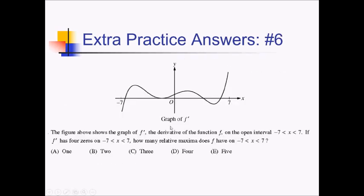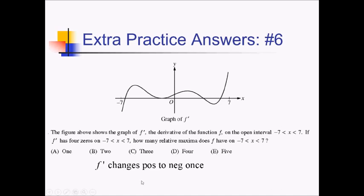On this problem, we're given the graph of f prime from negative 7 to 7 and we're told that there are four zeros on this interval. The reason they're telling us that there are four zeros is that this spot where we appear to be bouncing — by telling us we have four zeros, we're guaranteed that this right here really is just one zero where we are not crossing the x-axis. So how many relative maxes does f have? F prime is going to change from positive to negative wherever f has a relative max. Looking at the graph, f prime is changing positive to negative only once. Since f prime is only changing positive to negative once, f has only one relative max on this interval — so that would be choice A.